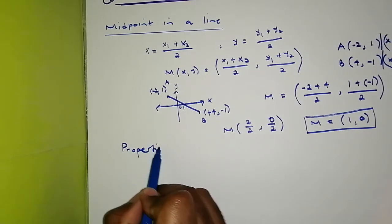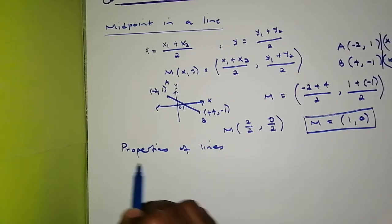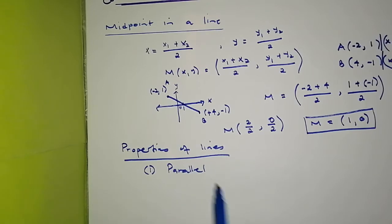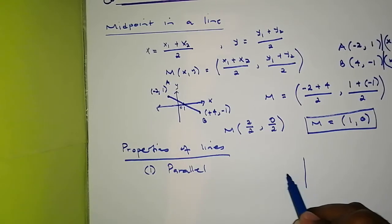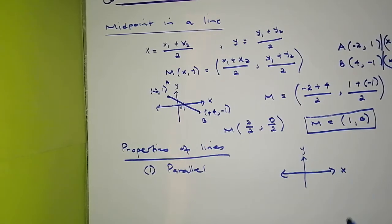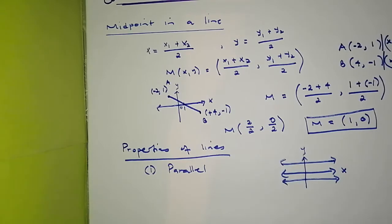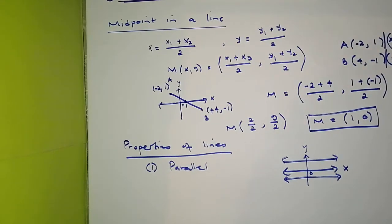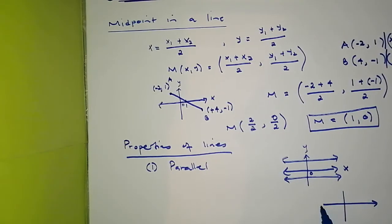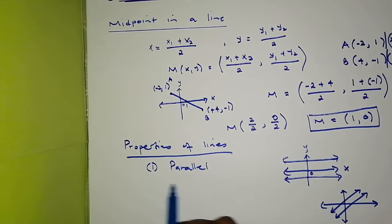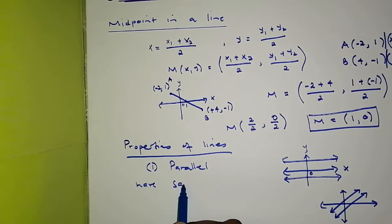Now let's learn about properties of lines. We're going to look at two things: firstly, when lines are parallel. Parallel lines — whether horizontal or slanted — are lines that run alongside each other. The lines we'll mainly consider are slanted lines. When lines are parallel, they have the same gradient.